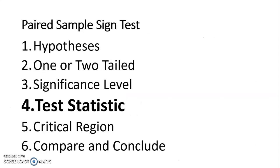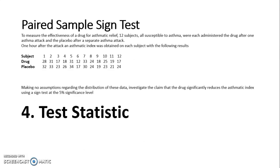Then calculating the test statistic. So with a sign test, we compared each value to the stated population average. But with this one, we're comparing the difference to zero. So in my hypothesis, I wrote down that we were doing drug takeaway placebo. So I'm going to use that subtraction in my test statistic.